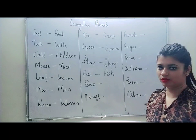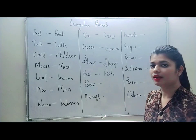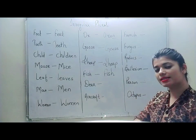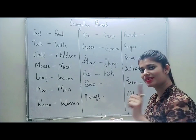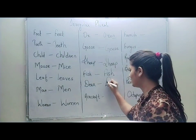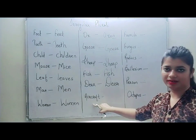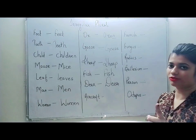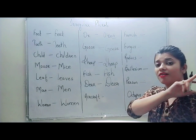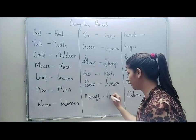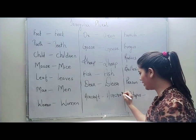Next comes deer, which is an animal. Note that D-E-A-R dear is used for loved ones, but D-E-E-R deer is an animal. The plural form of deer will not be deers — it will be deer again, no change. Next word is aircraft. Whether one or more, we say aircraft. Not aircrafts — it will be aircraft only, A-I-R-C-R-A-F-T.